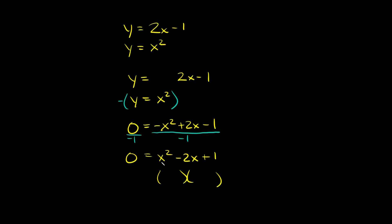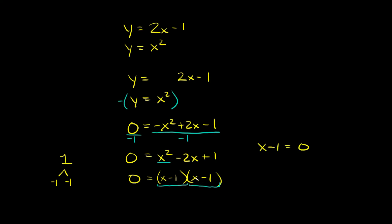Let's factor x squared minus 2x plus 1. We need two numbers that multiply to positive 1 and add up to negative 2. That would be negative 1 and negative 1, since negative 1 times negative 1 is positive 1, and negative 1 plus negative 1 is negative 2. So we get 0 equals (x minus 1)(x minus 1). Since both factors are identical, we only need to write x minus 1 equals 0 once, giving us x equals positive 1. That means there's only one answer: x equals 1.